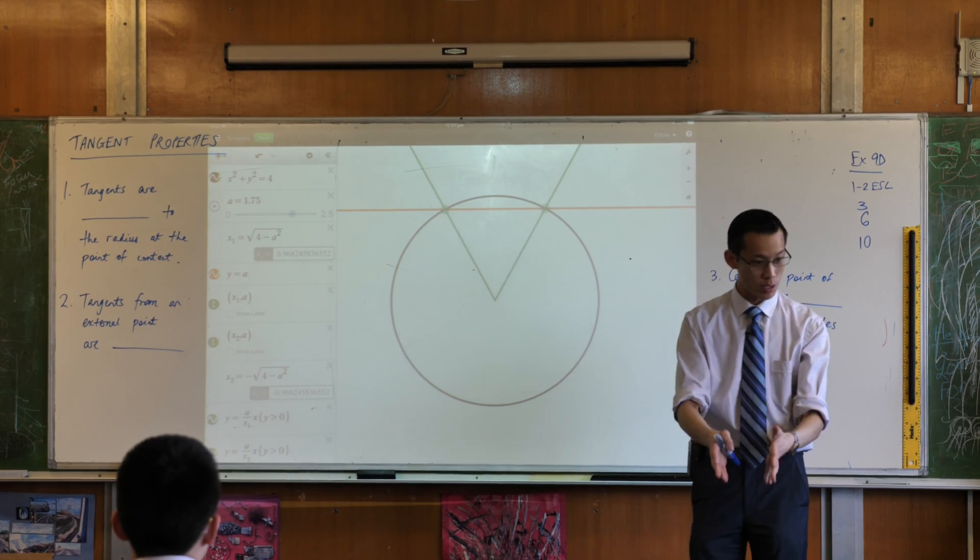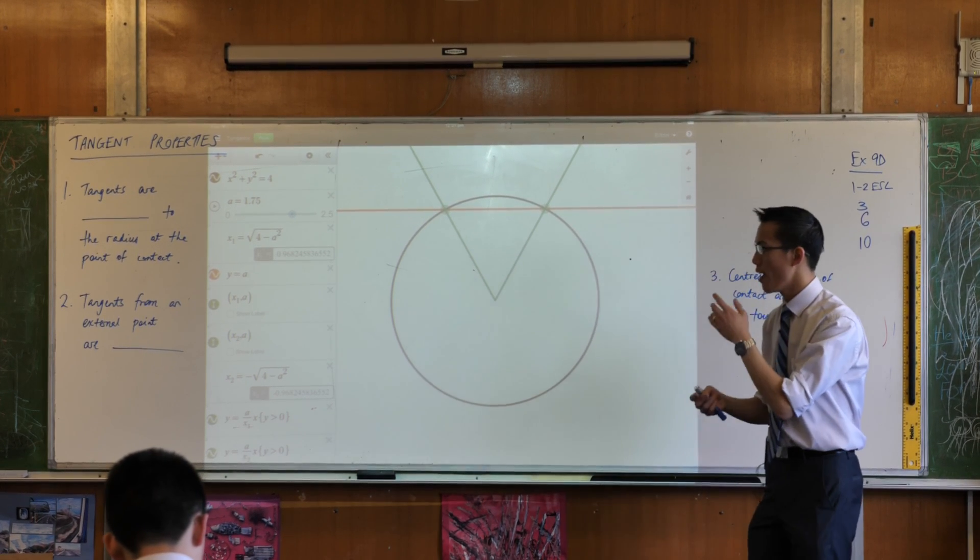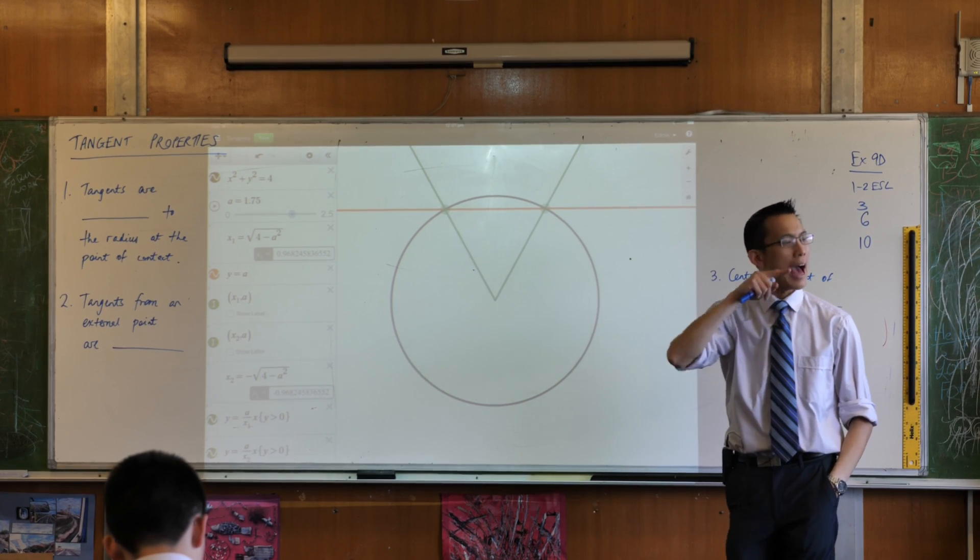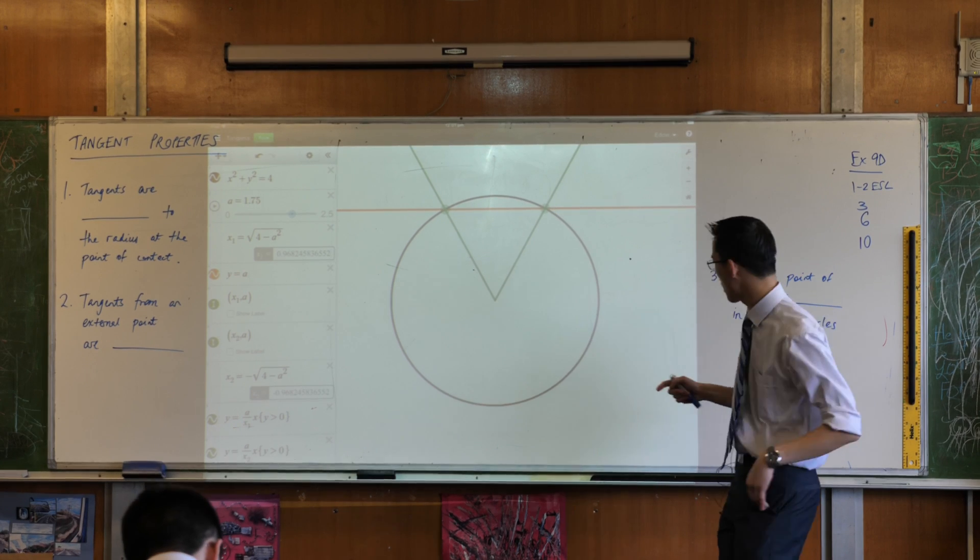Okay, so go ahead, draw yourself a circle, draw a tangent, any tangent that you like, and then at the point where that tangent intersects with the circle, at that point of contact, I'd like you to draw the radius. Can you go ahead and do that for me?